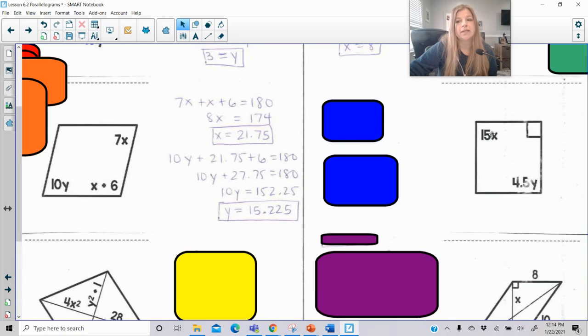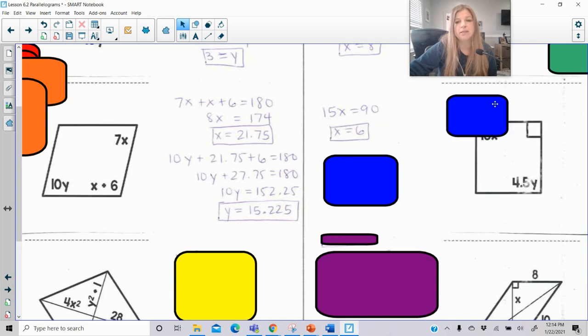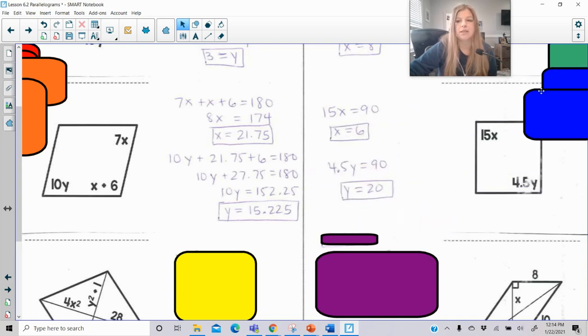Here, if I have one right angle, we learn that then all of the angles are right angles. So that means 15x is equal to 90. So x is 6. And 4.5y would be equal to 90. So y is 20.